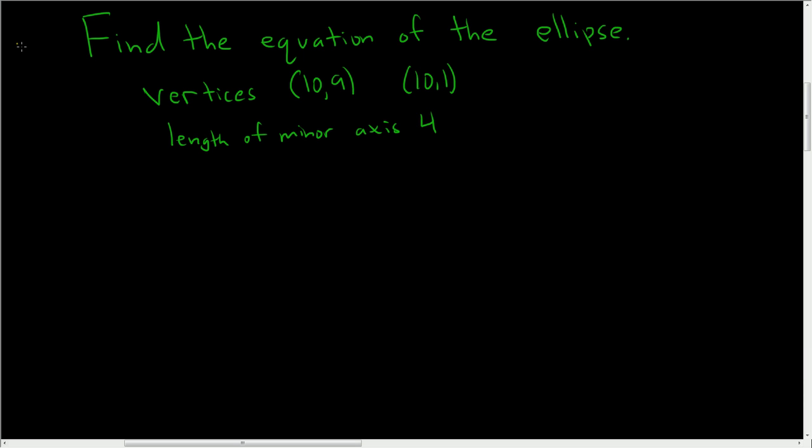Find the equation of the ellipse. We're given the vertices, which are the endpoints of the major axis, and we're given the length of the minor axis. So, solution.